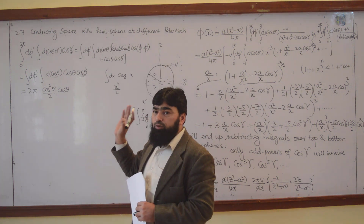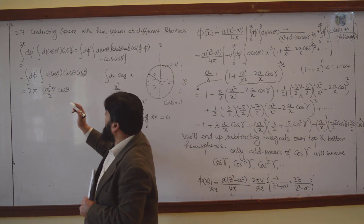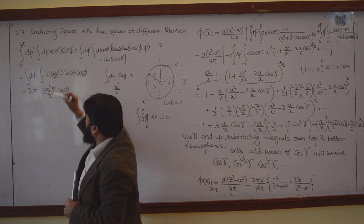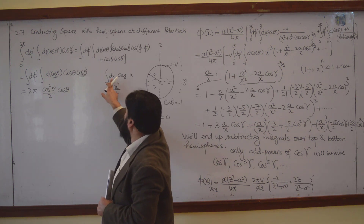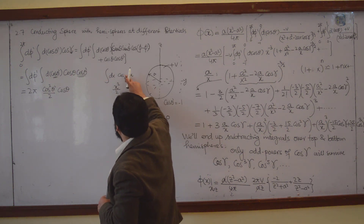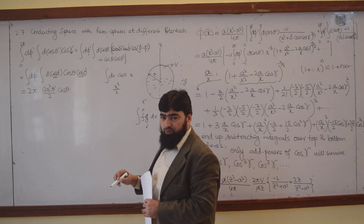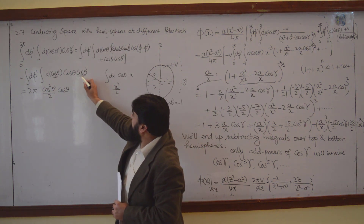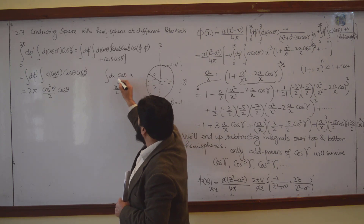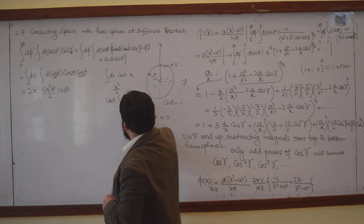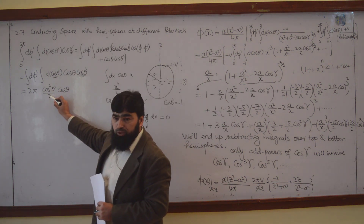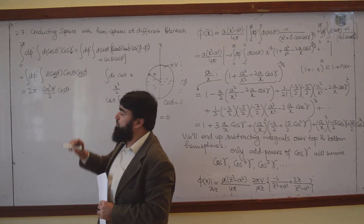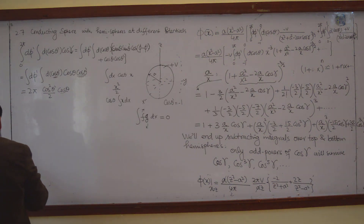You will have to first understand the integral and then apply your formula. Let cos θ' equal x, then the differential becomes dx. Cos θ is just a constant — write it as cos θ to avoid confusion. With cos θ' = x, cos θ comes out as a constant, and the integral of x dx gives x squared by 2, which equals cos² θ' divided by 2.